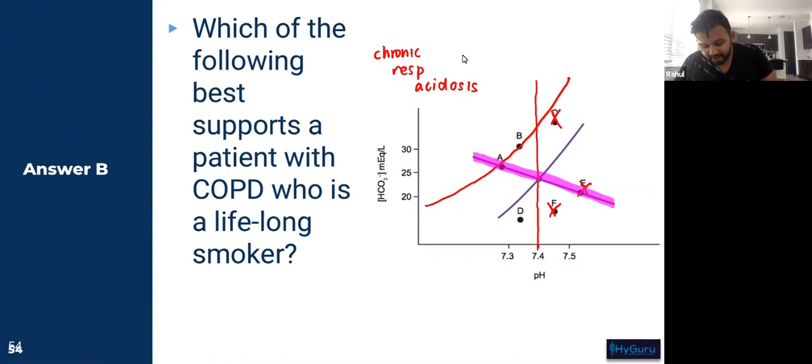Answer choice B is exactly what's going to fit with the chronic respiratory acidosis. And that is going to be when your kidneys are going to say, wow, I have a lot of CO2 in my body. And thus, they are going to reabsorb more bicarb. And this occurs at the level of the proximal convoluted tubule.